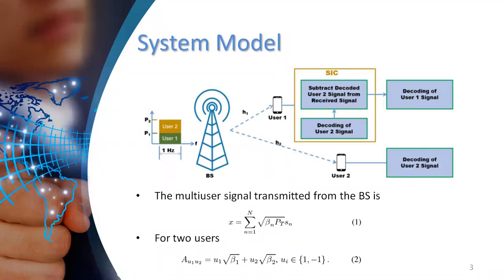The typical system model of NOMA system in downlink scenario consists of a base station transmitting data traffic to two users using the same resource block. And to do so,